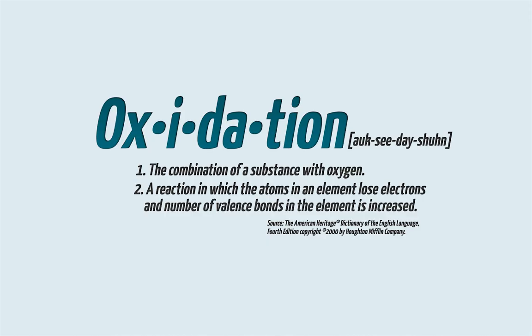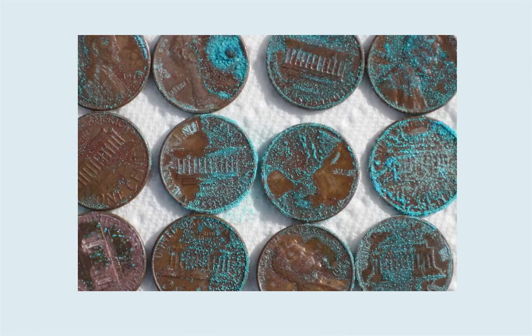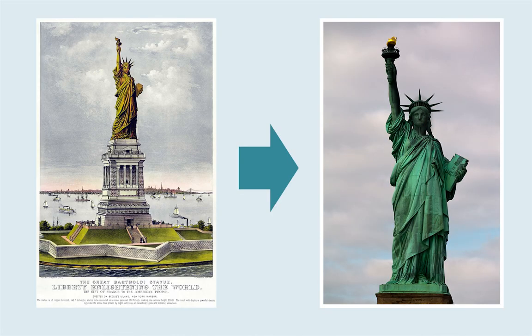We can see oxidation every day. The browning of the inside of an apple is an example of slow oxidation, as is the green color on copper. The Statue of Liberty was originally copper colored, but oxidation turned the brownish metal to the green we recognize today.